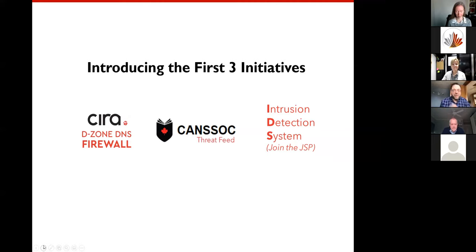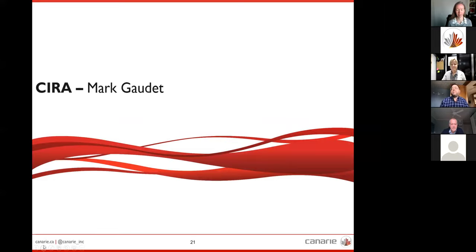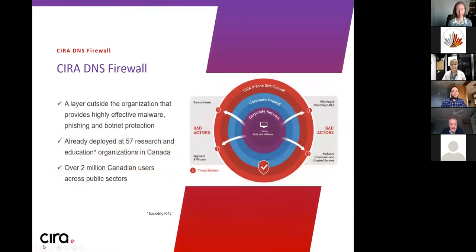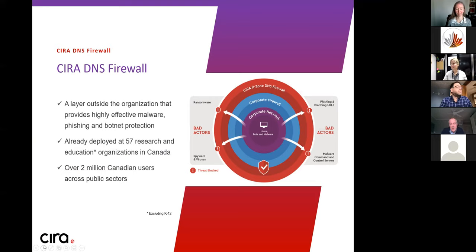Up first is Marc Gaudet, the product manager for cybersecurity at CIRA, and Mark is going to talk about the DNS firewall. DNS is used by every device and every application on the network, which provides a level of visibility into what's happening. You can see all legitimate DNS queries, and you can also get visibility on clicks to phishing links and infected sites, and see the command and control for botnets operating inside the network. The DNS firewall looks at all DNS queries coming out of your network, compares them to multiple threat feeds, and allows or blocks them — specifically preventing users from accessing known infected sites, phishing sites, and disabling botnets at the command and control level.